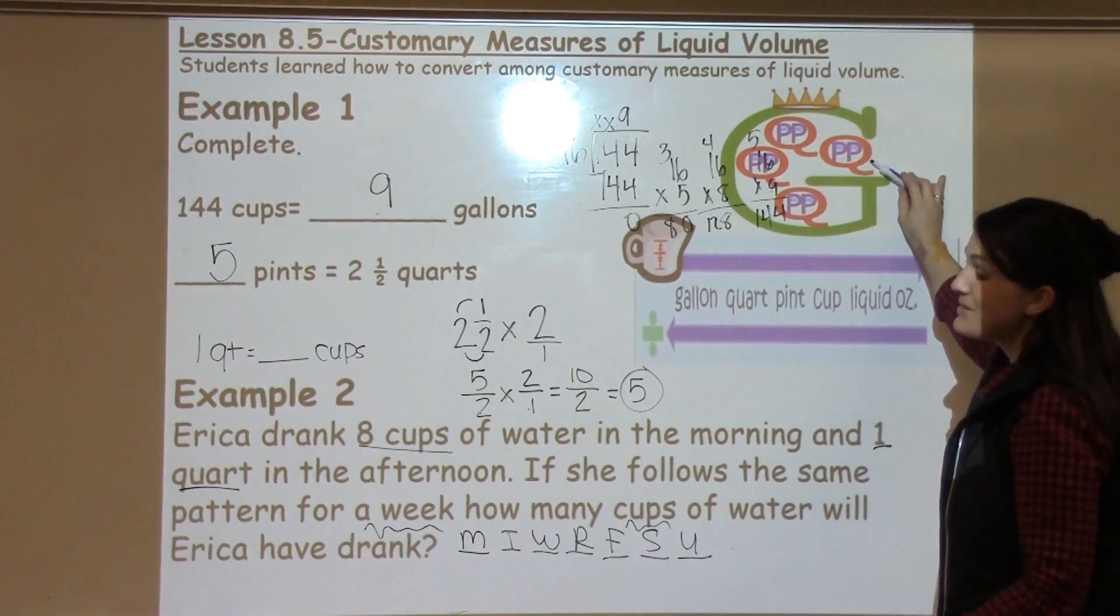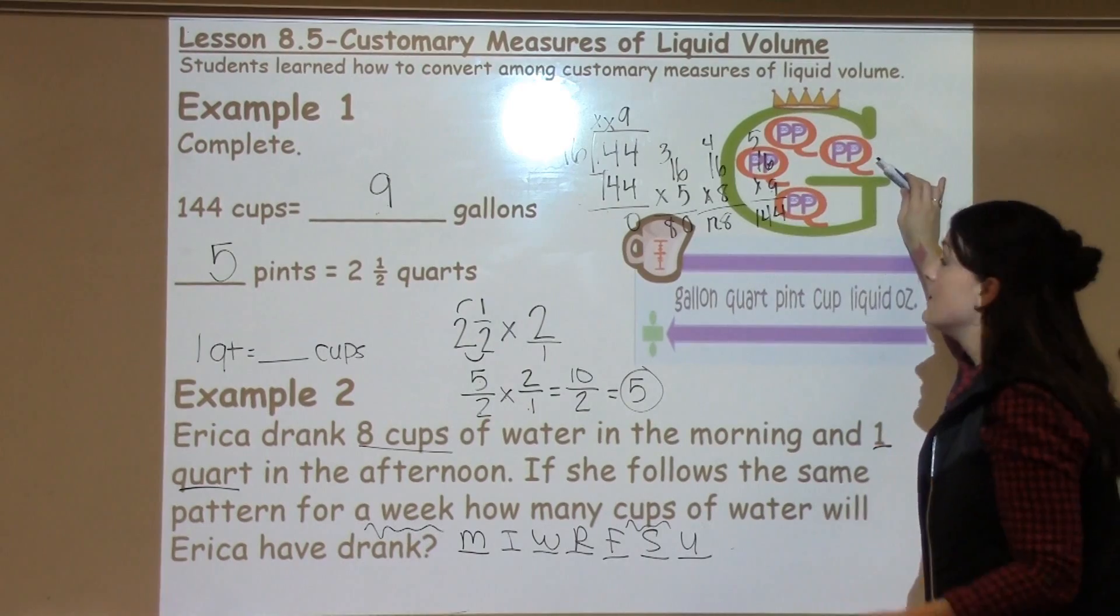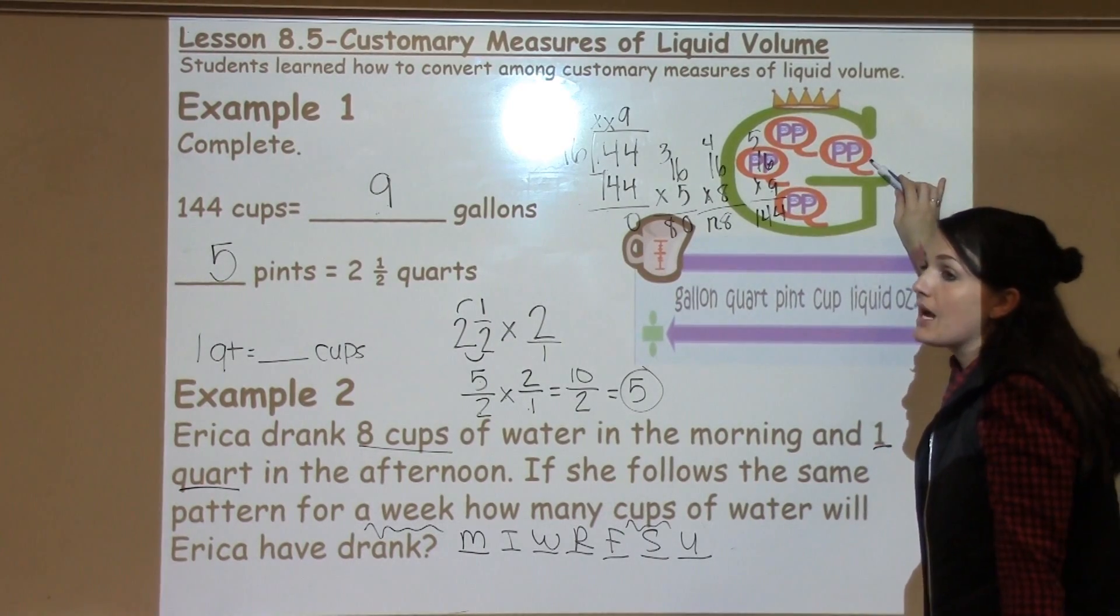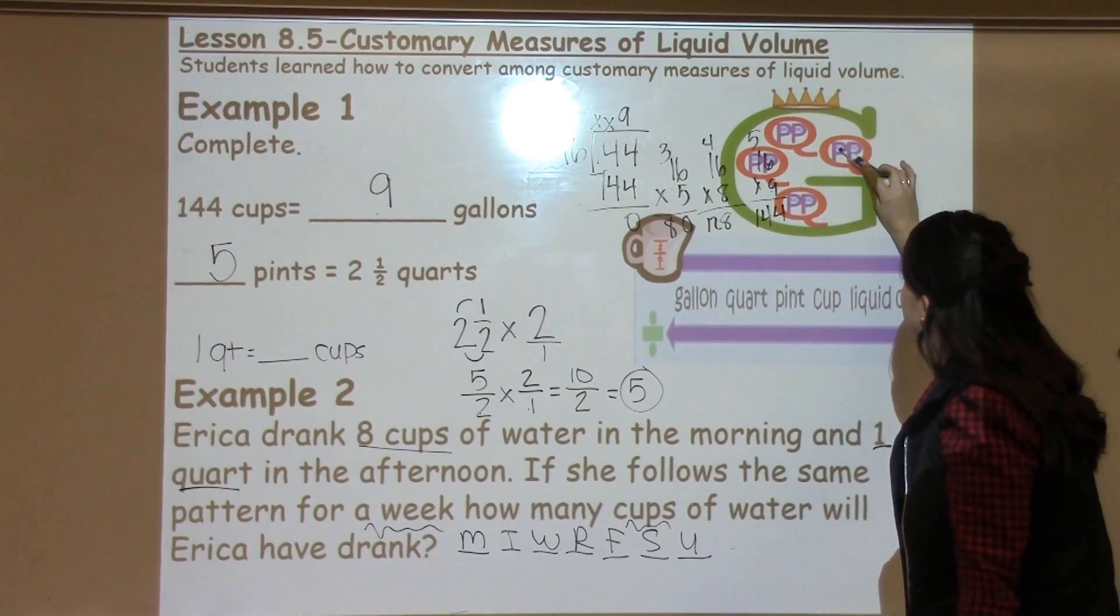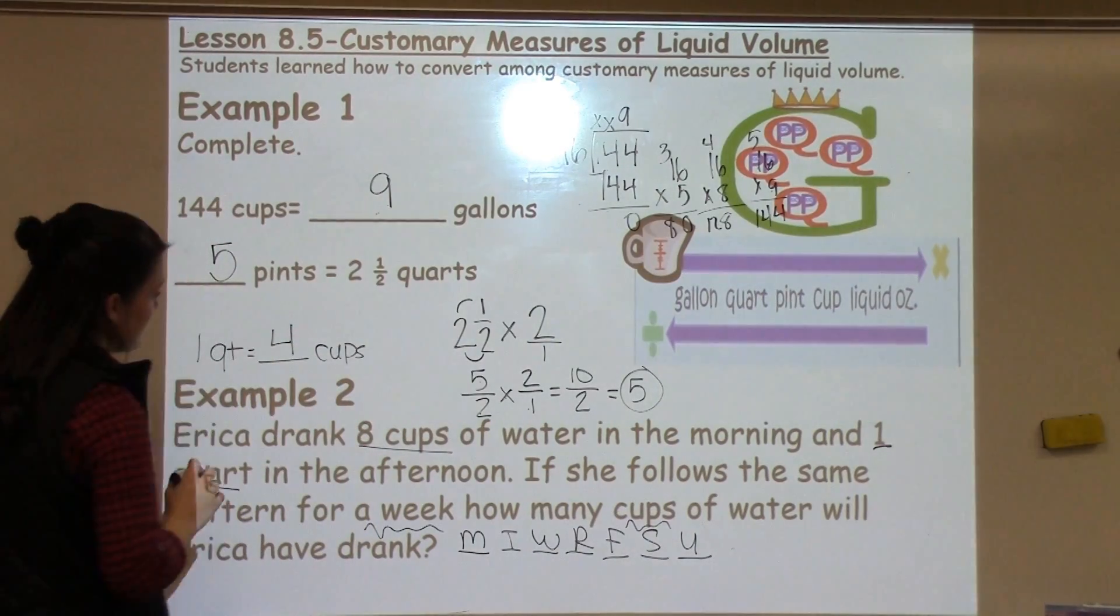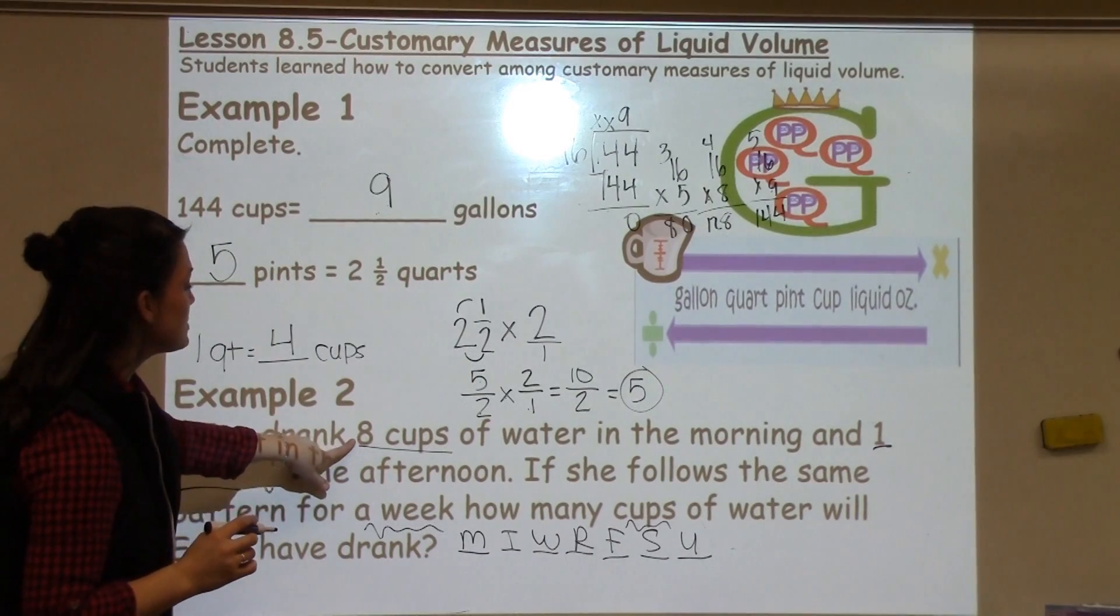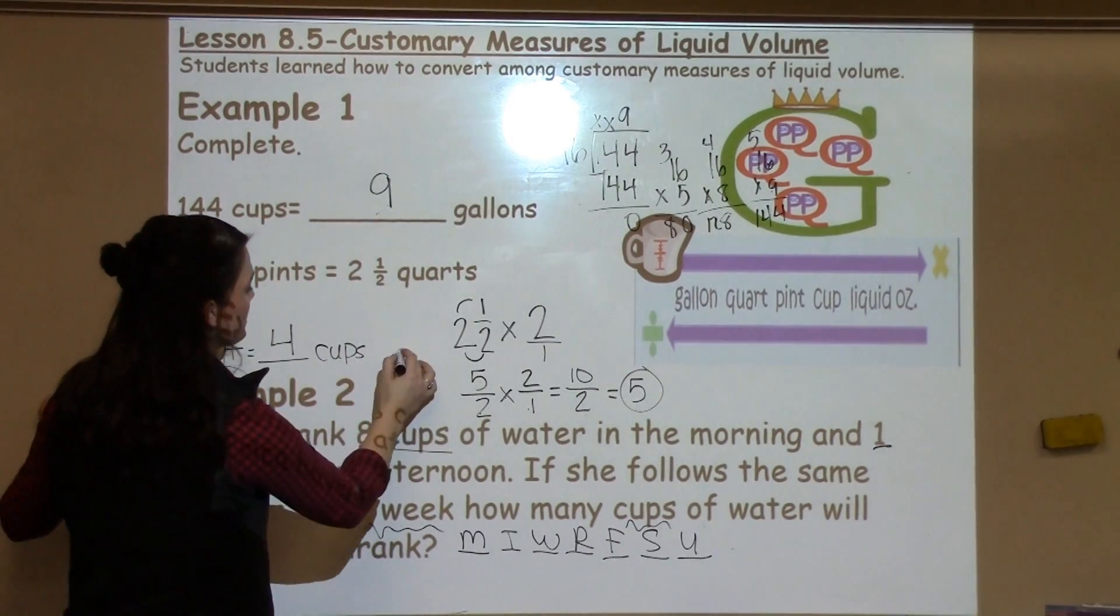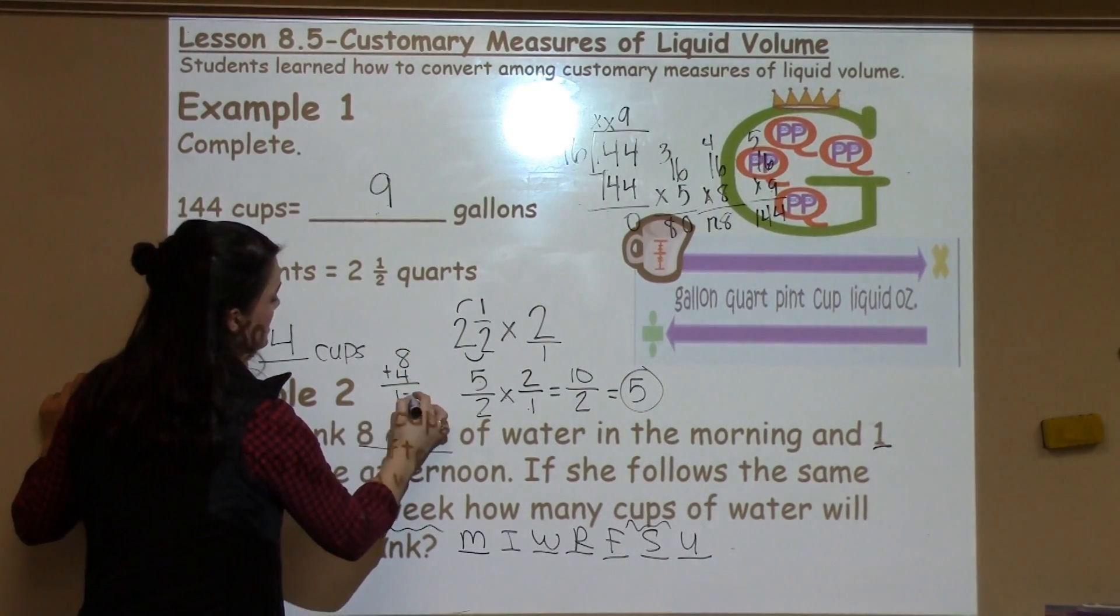So, I'm going to look up here at my big G. Because I'm only working with 1, I can just look and see how many cups are in 1 quart. And I see that there's 1, 2, 3, 4 in 1 quart. So, I've got 4 cups in the afternoon, 8 cups in the morning. I know that 8 plus 4 is 12. And that means I'm drinking 12 cups, or excuse me, Erica is drinking 12 cups of water each day for a week.